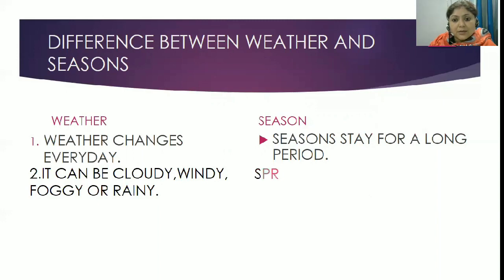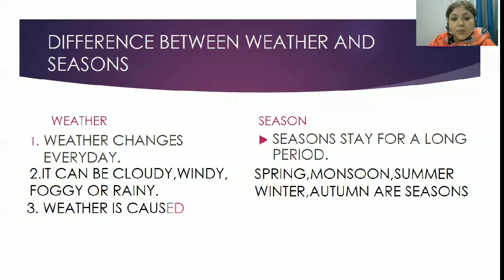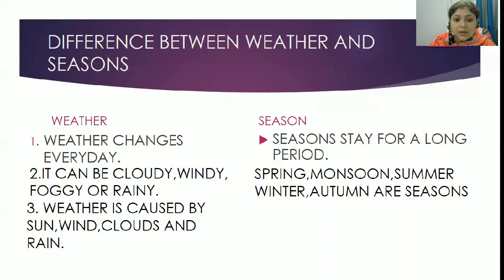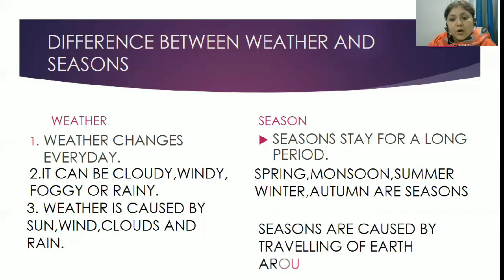Whereas spring, monsoon, summer, winter, and autumn are seasons. Weather is caused by the sun, the wind, clouds, and rain. Whereas seasons are caused by the traveling of the earth around the sun.